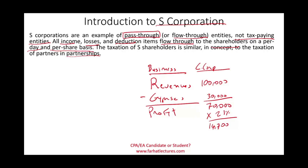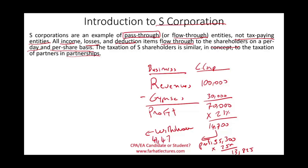Now assume the owners withdraw the remaining after-tax profit. After paying $14,700 in corporate tax, $55,300 is left. If the owners then pay personal taxes at an assumed rate of 25%, that's another $13,825, leaving only $41,475. The money has been taxed twice — this is double taxation.